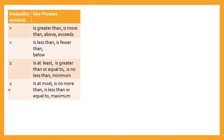For less than or equal, we have: is at most, is no more than, is less than or equal to, or maximum. Which means, if we have the greater than or equal symbol, that's the minimum value that we can give. If we have the less than or equal, that means that's the maximum value that we can give — is at most.